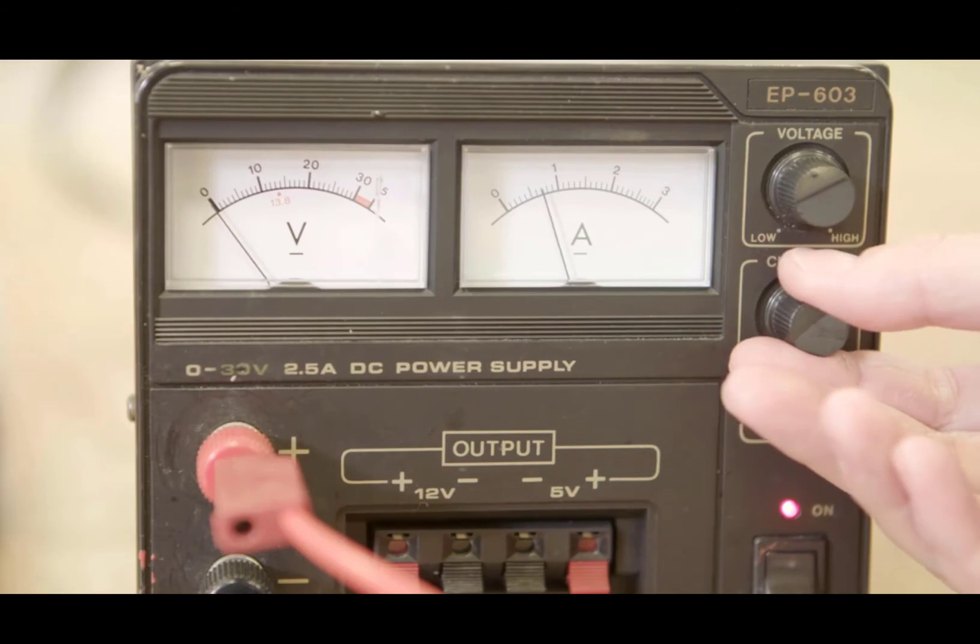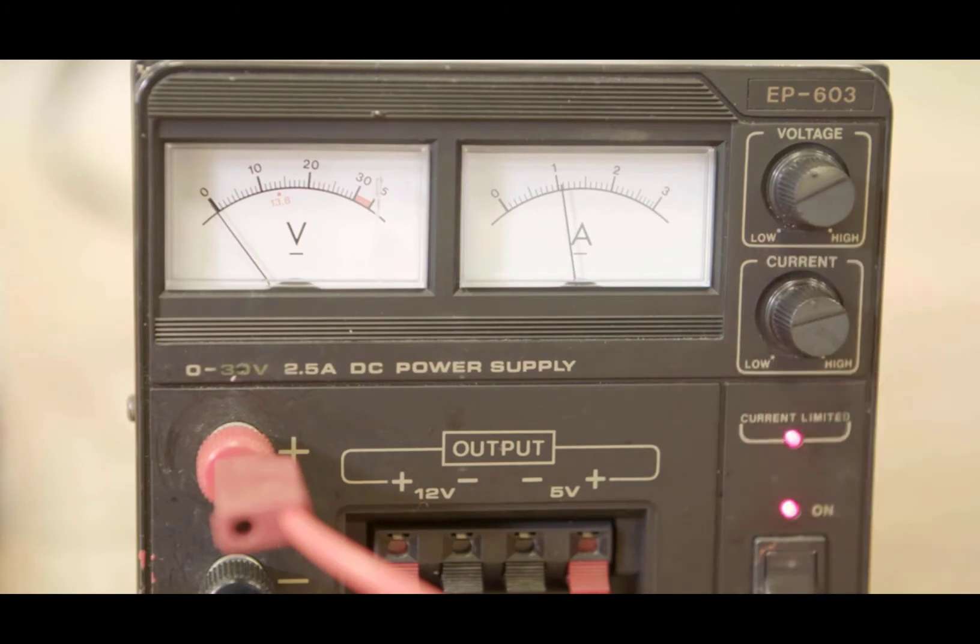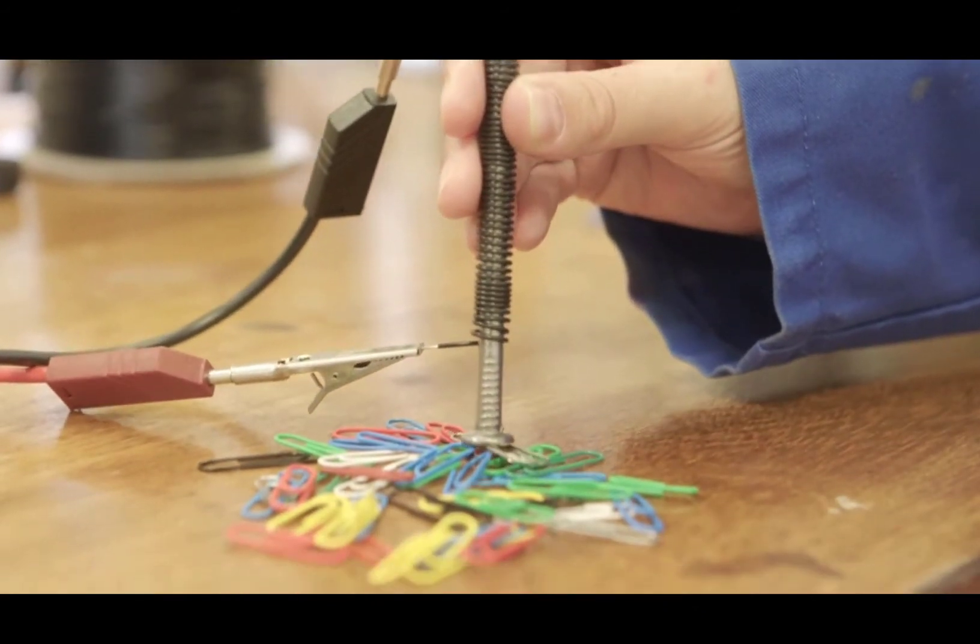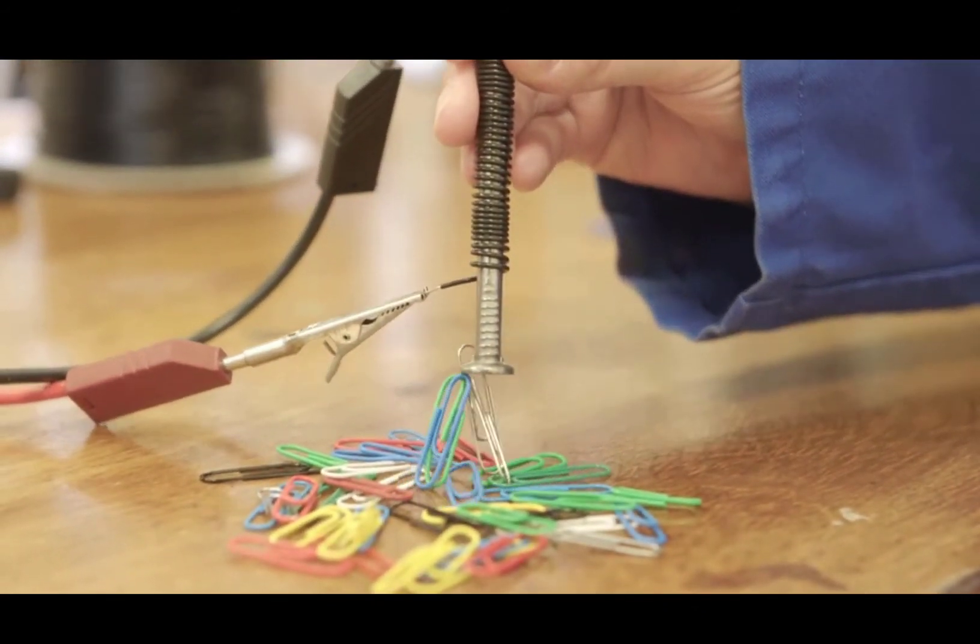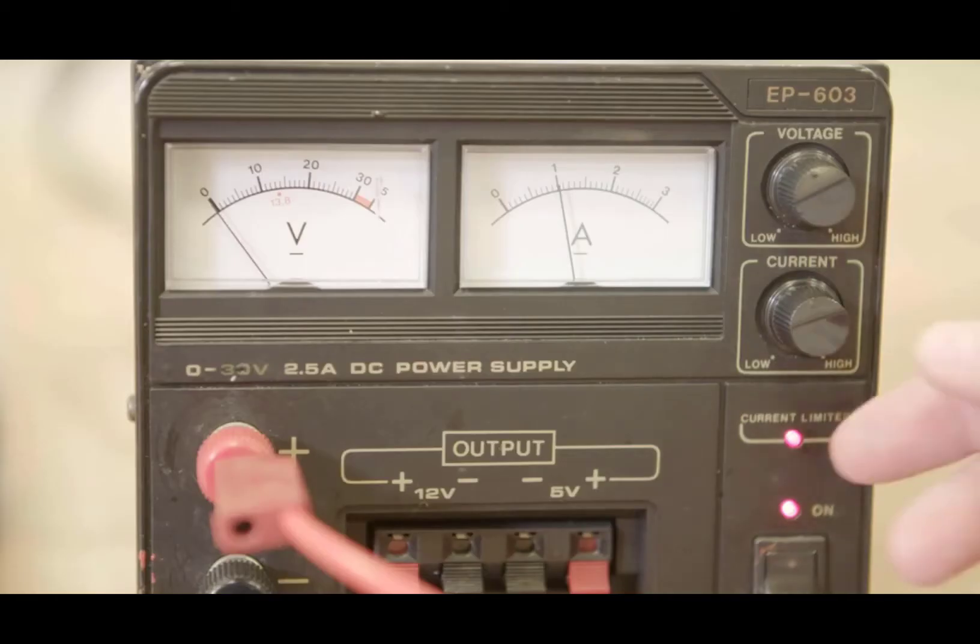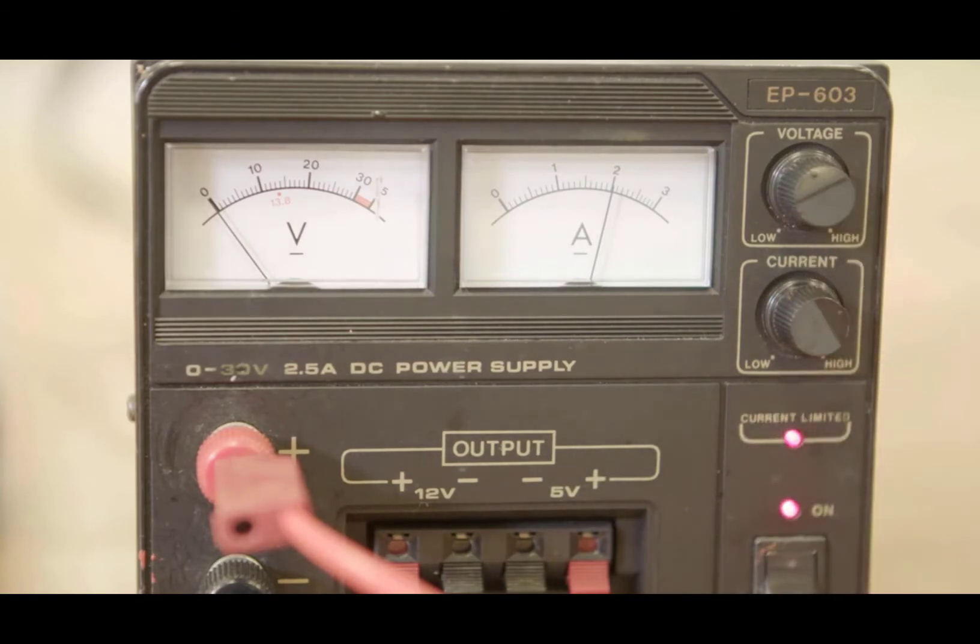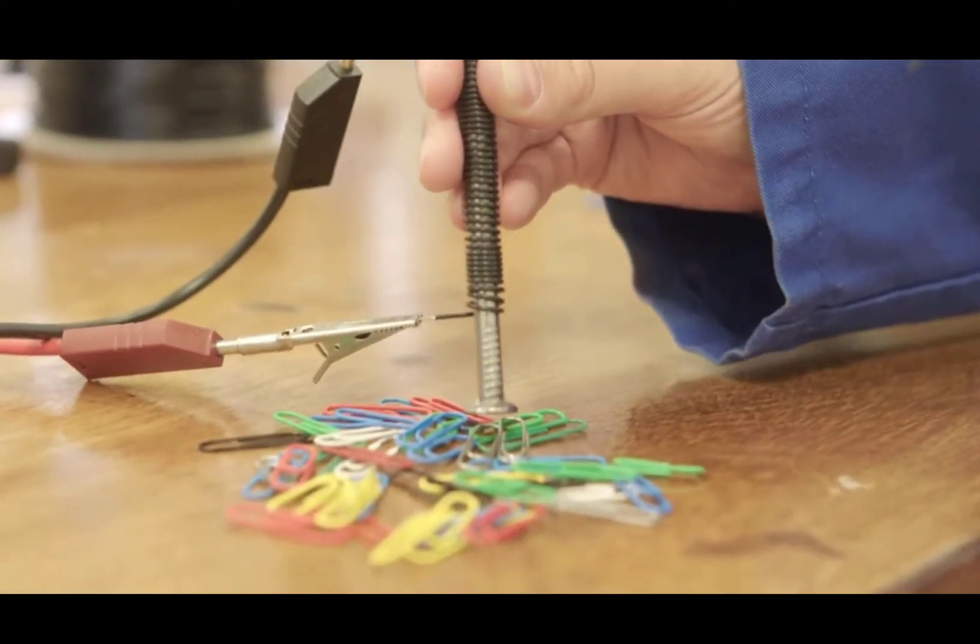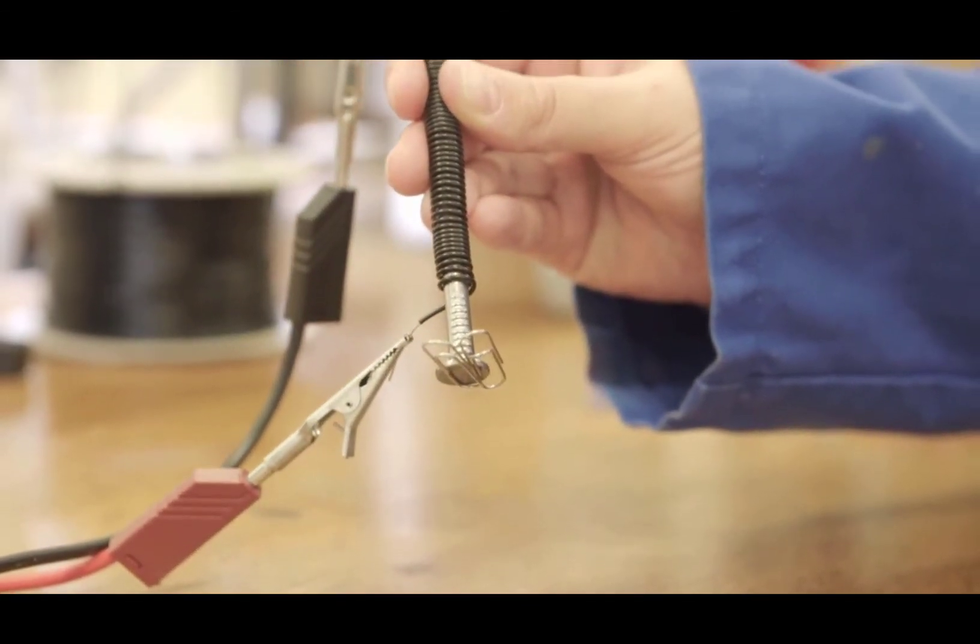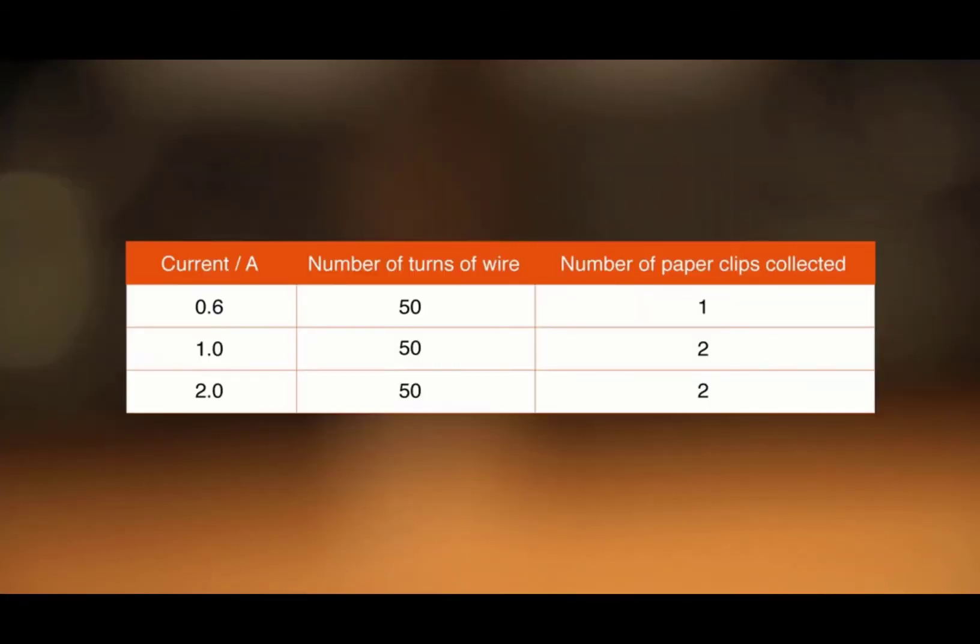The first variable being changed is the current. It has now been increased. The number of paper clips collected using the increased current is counted and recorded. Now the current has been increased again. The final number of paper clips collected by the magnet is counted and recorded. It is clear that as the current increases, the strength of the electromagnet has increased.